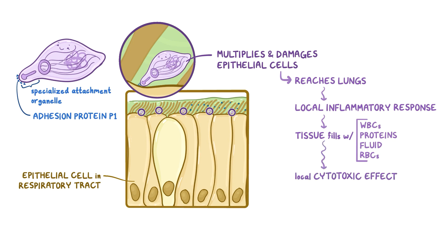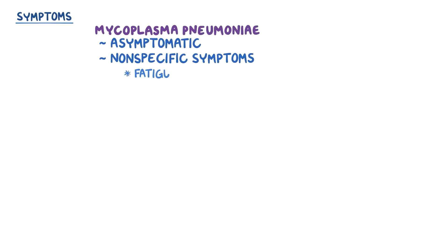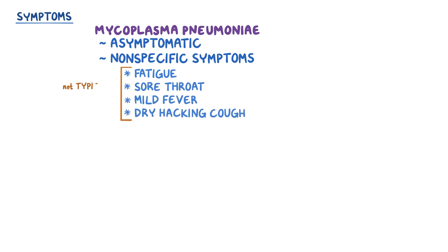Mycoplasma pneumoniae avoid the battlefield by sneaking inside lung cells, where they remain dormant or replicate intracellularly. As a result, individuals infected by mycoplasma pneumoniae are often asymptomatic, or might have nonspecific symptoms like fatigue, sore throat, mild fever, and dry hacking cough, all of which aren't typical of bacterial pneumonia, hence the name atypical pneumonia.